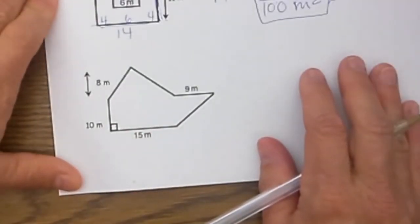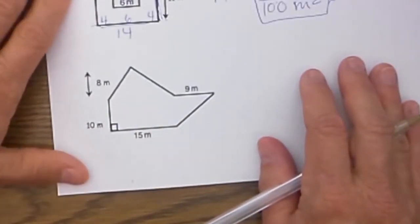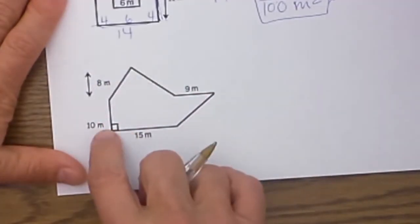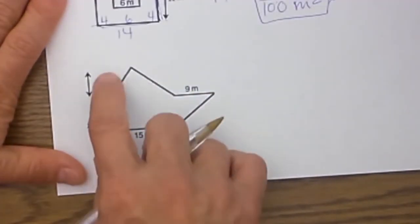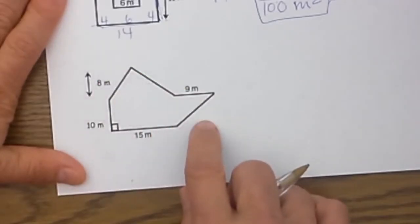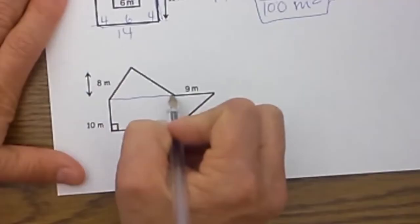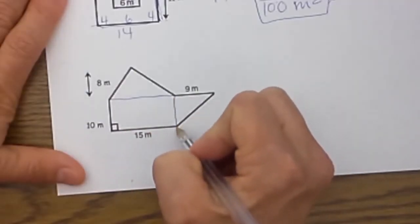I wanted to do one that had three parts. This one has three sections and you could use the method where you fill the whole area in and then subtract parts, but you would have one, two, three parts. I think this one is just as easy to divide up into sections.